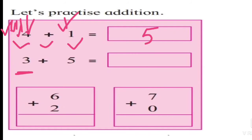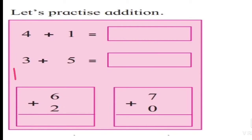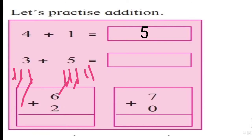This is three. Three plus five. Let's draw the lines: three. We have to add five: one, two, three, four, five. Let's count: one, two, three, four, five, six, seven, and eight. Three plus five is equal to eight.